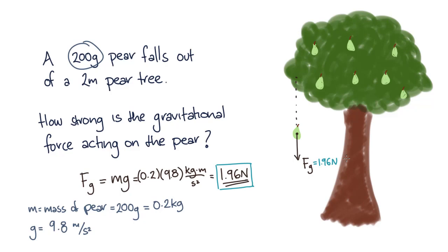Now you may have noticed that the height of the tree doesn't affect our answer. Near the Earth's surface, we approximate the acceleration due to gravity as 9.8 meters per second squared, regardless of the height of objects above the ground.